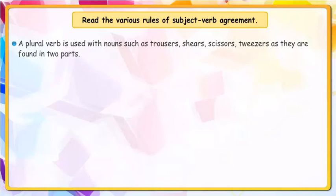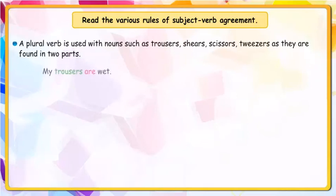A plural verb is used with nouns such as browsers, shears, scissors, and tweezers, as they are found in two parts.